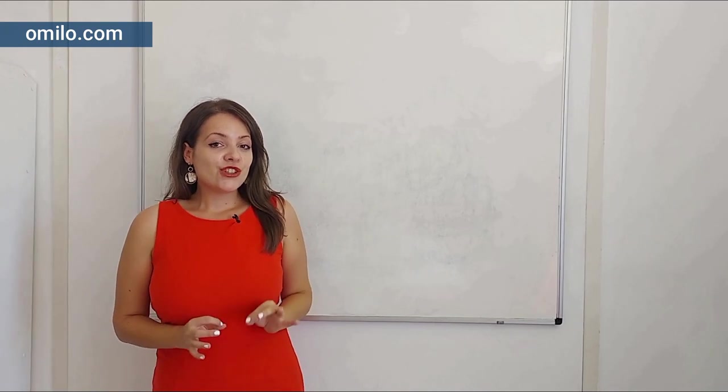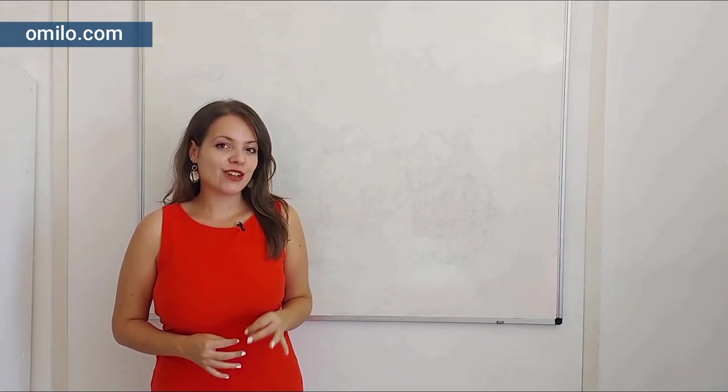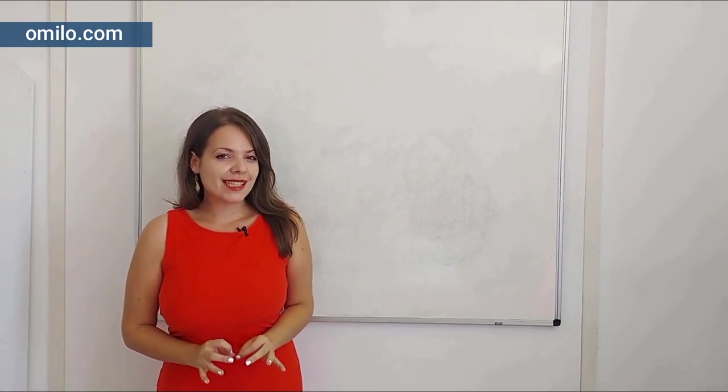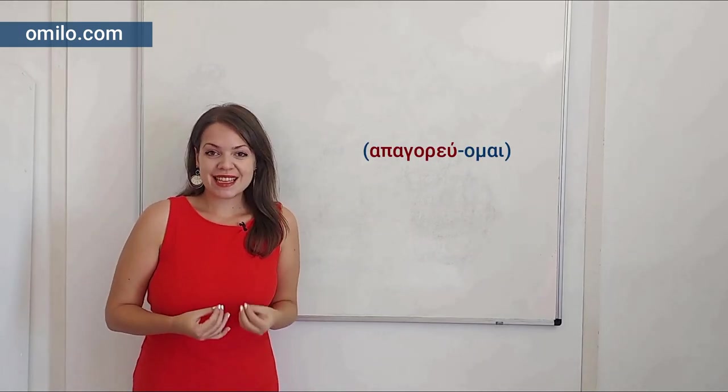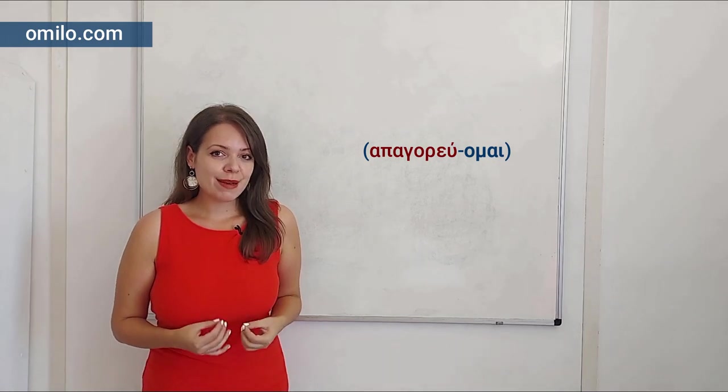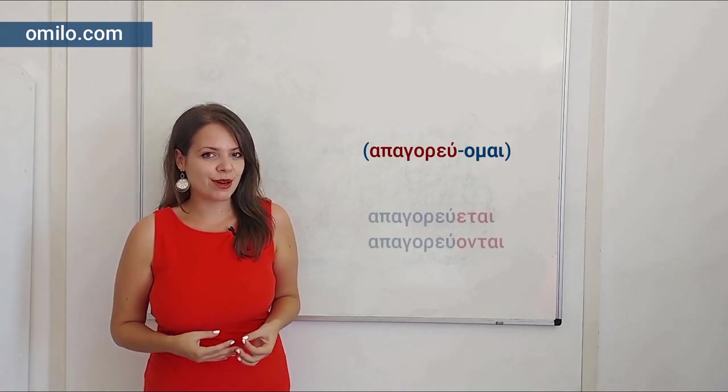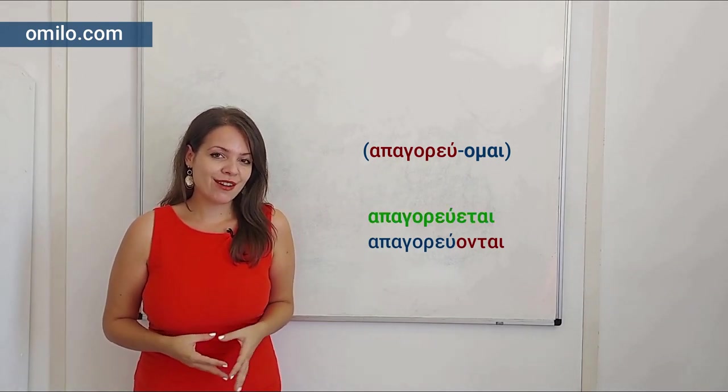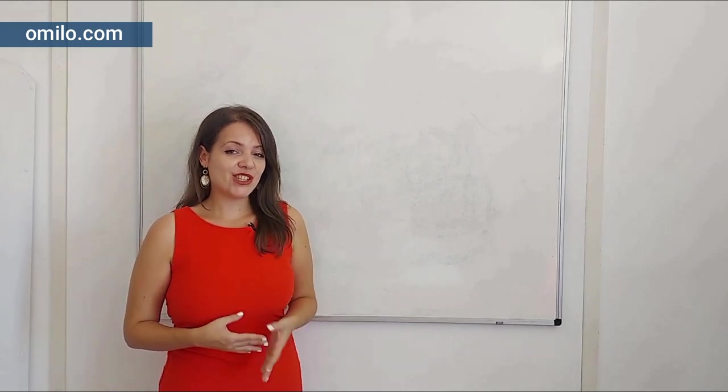Now we can also turn this verb in the passive voice by changing the conjugation. Passive means you are now saying that something is forbidden. So you keep the same stem but you change the ending. Keep in mind that in passive voice we only use the third person in singular and plural, but the most common by far is the third person in singular. So the conjugation is as follows.